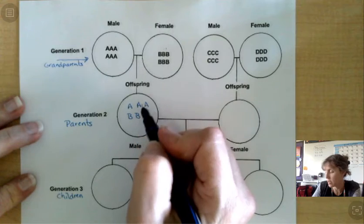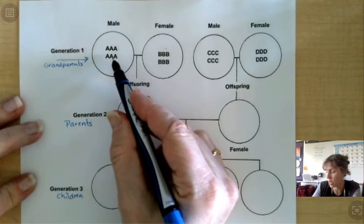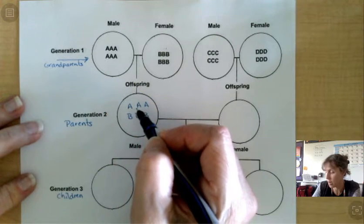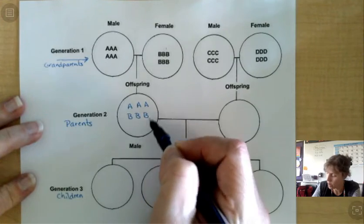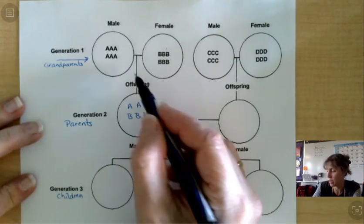So half of the traits came from this Grandma, half of the traits came from this Grandpa to the Father. To their offspring.